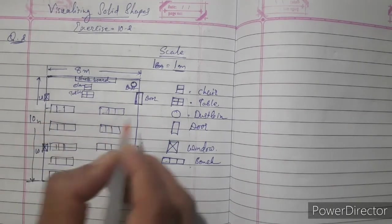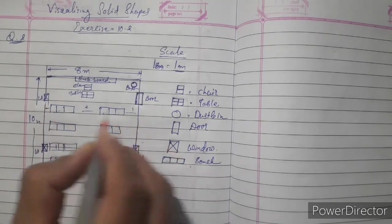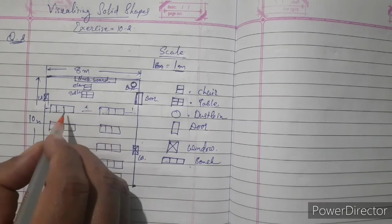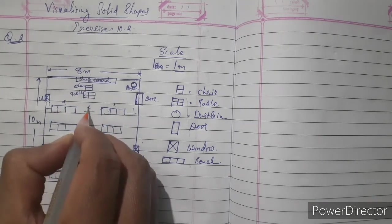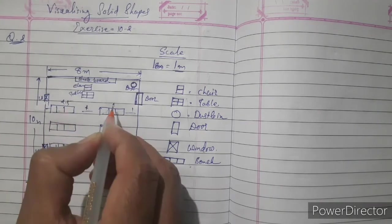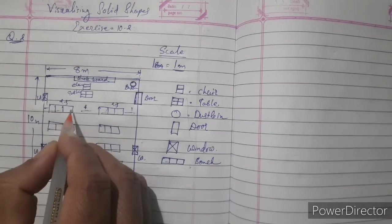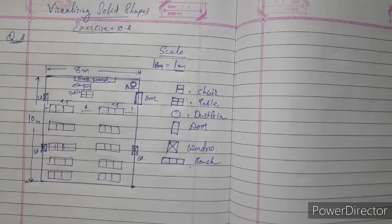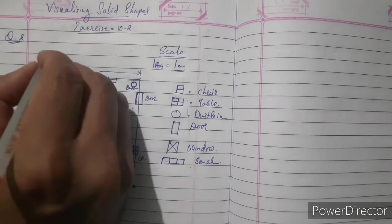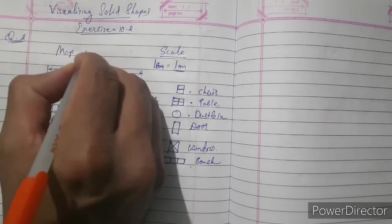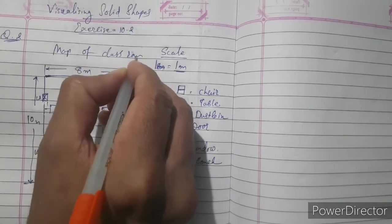Just leave one centimeter from both sides and between them two centimeters. So one centimeter, one centimeter, two centimeters, four centimeters. And that is two and two centimeters. Otherwise here three and here two point five. Length of that one is two point five. And make it properly. That is the map of your classroom. Just write down here map of classroom.